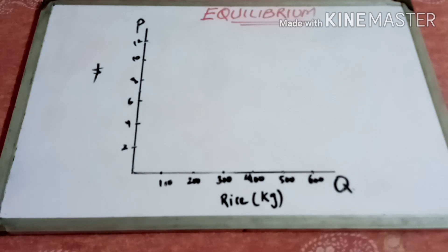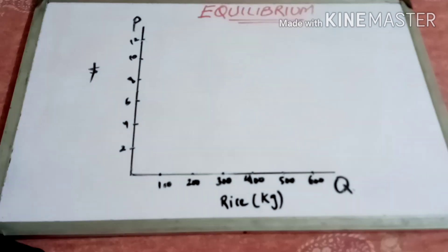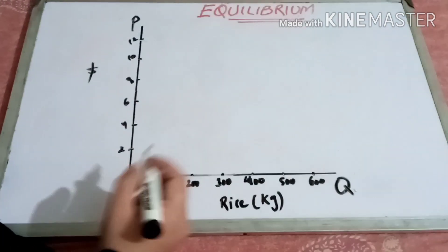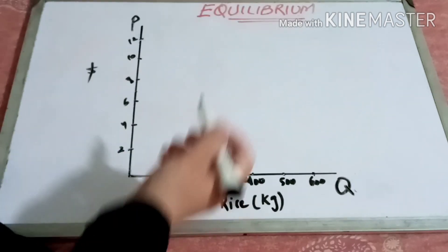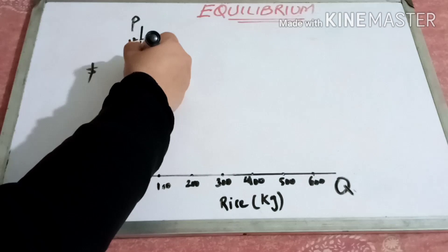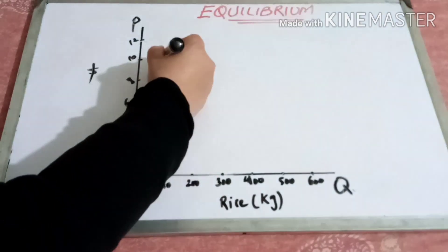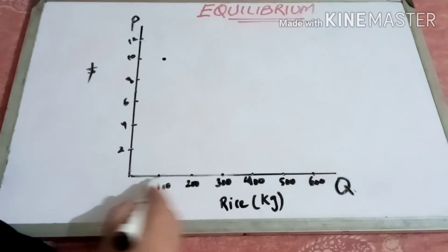Here we are taking the example of rice. We will see at what price consumers are willing to buy how much quantity, and suppliers are willing to sell how much quantity. The rice is measured in kilograms and the price is in dollars. First we draw the demand function: when the price was ten dollars, consumers were willing to buy only 100 kg.